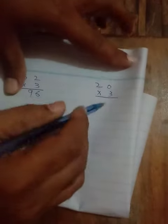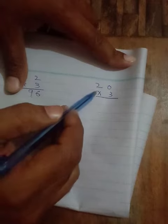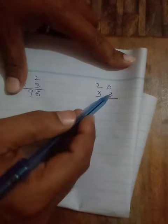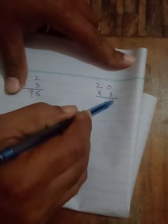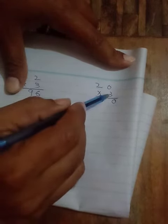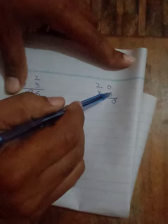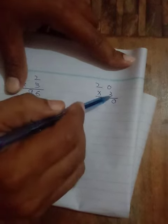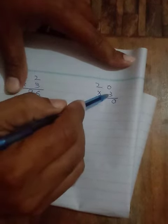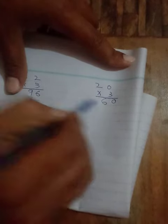Now let's solve the next sum. Here we have 20 multiplied by 3. First, 3 times 0 equals 0, so we write 0. Then, 3 times 2 equals 6, so we write 6. The answer is 60.